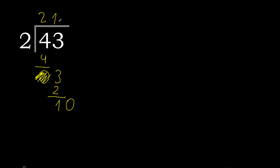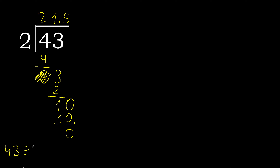Therefore complete — always complete with 0, and here with a decimal point. 2 multiplied by 5 is 10; subtract 0. There is no number that goes down, therefore finish. Therefore 43 divided by 2 is 21.5.